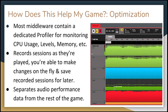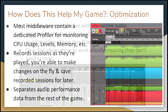Middleware can also help with optimization. Most middleware comes with a dedicated profiler that can measure CPU usage, memory, and audio-specific things like sound levels and voice counts. While Unreal and Unity have their own profilers monitoring everything, this one is dedicated specifically to audio. A dev team can monitor the audio's impact on overall performance, record profiling sessions, change settings within the middleware while the game runs, save those sessions, and compare them later to see what impact changes made.